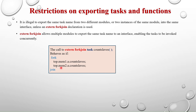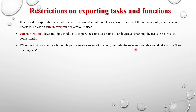When you use the extern fork join keyword, this is what happens internally. Consider 'top' as your module name, and mem1 and mem2 are instances of top. The common method 'count_slaves' is used in the interface with extern fork join — written as 'extern fork join task count_slaves'. When written like this, it will be executed in parallel in both instances of the top module. When the task is called, each module performs its version of the task, but only the relevant module should take action. Whether you need it or not, the methods will be executed, but the relevant module should respond.